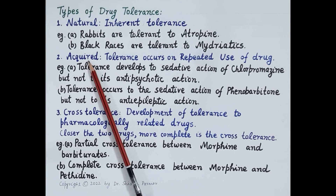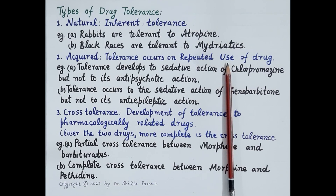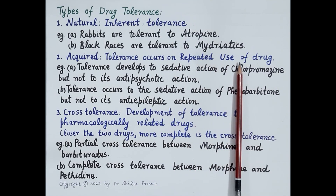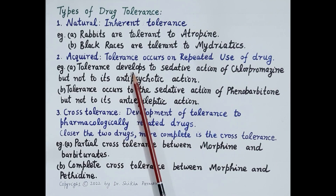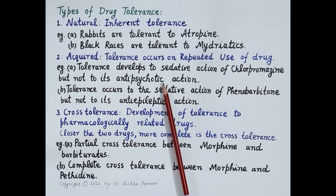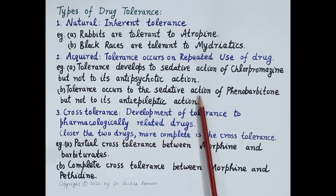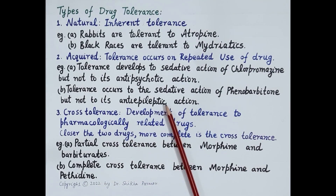Another type is acquired tolerance, which occurs on repeated use of a drug. Acquired tolerance can develop to one action of a drug while sparing other actions. For example, tolerance develops to the sedative action of chlorpromazine but not to its antipsychotic action. Similarly, tolerance occurs to the sedative action of phenobarbitone but not to its antiepileptic action.